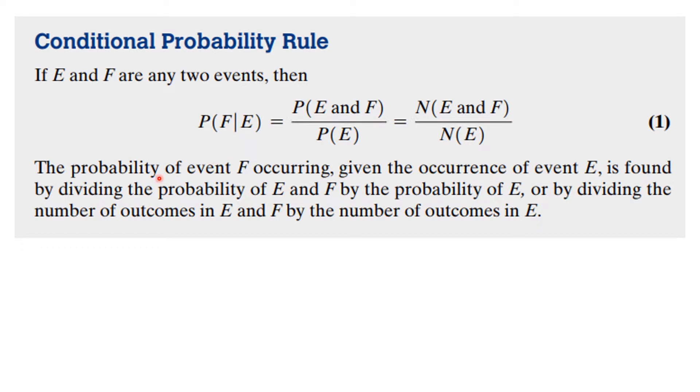The probability of event F occurring, given the occurrence of event E, is found by dividing the probability of E and F by the probability of E, or dividing the number of outcomes in E and F by the number of outcomes in E.